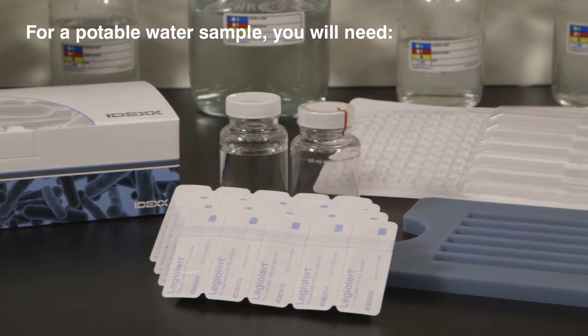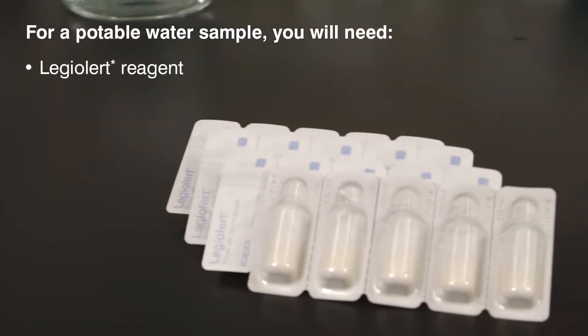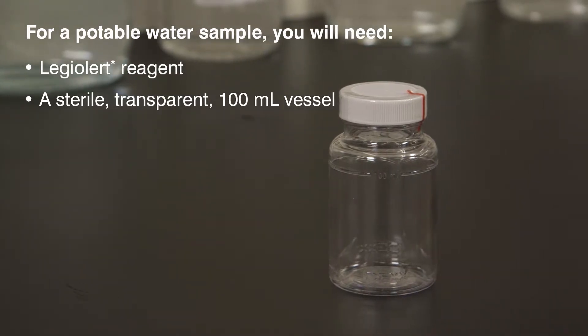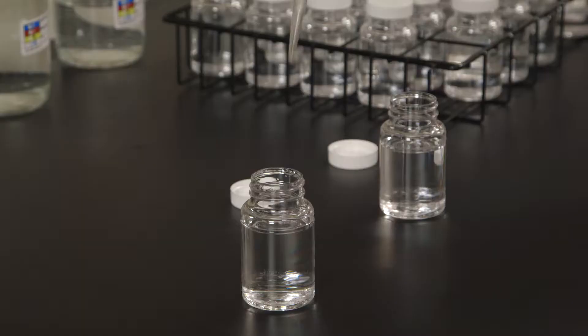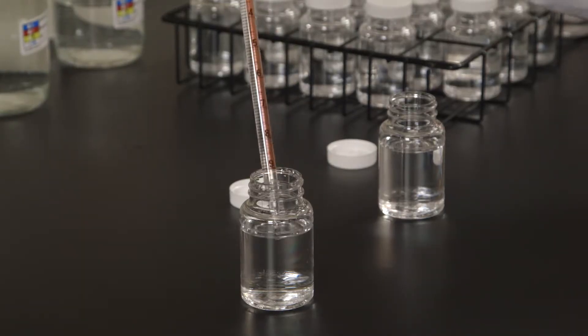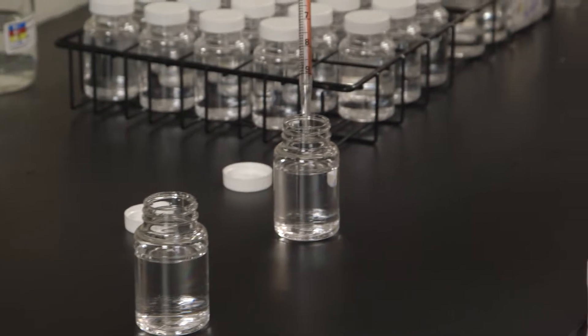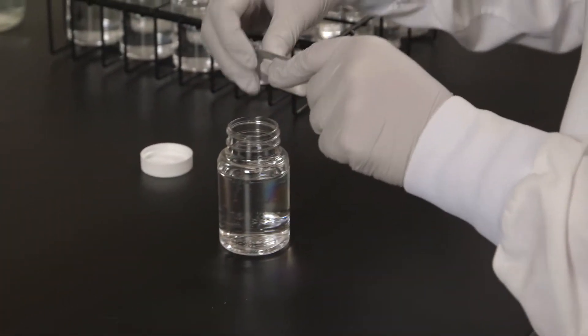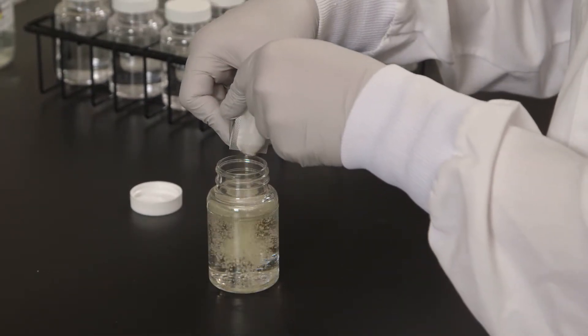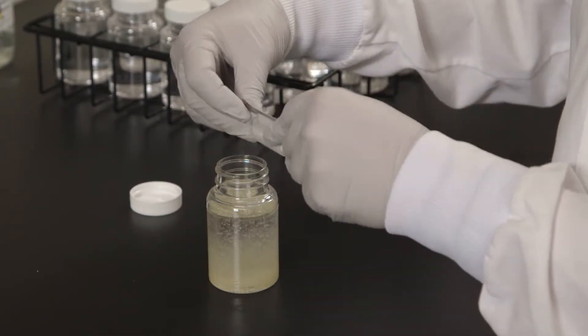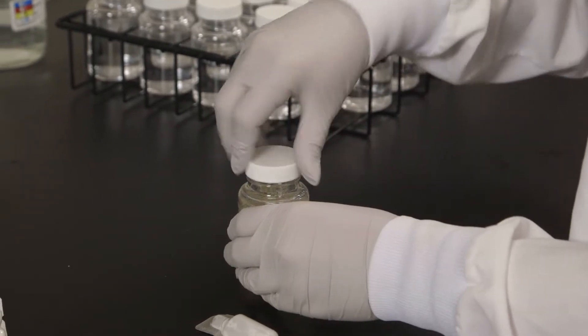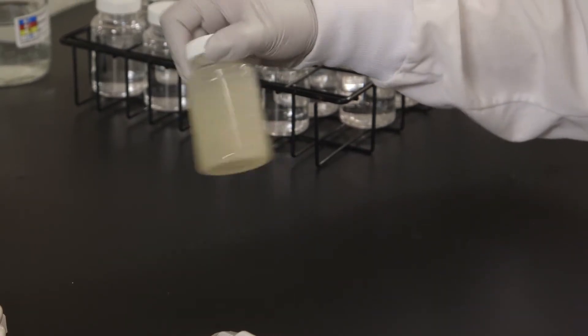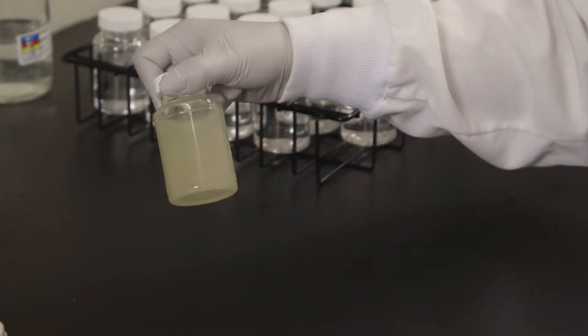To prepare a potable water sample, you will need the LEG-ALERT reagent, a sterile transparent 100 mL vessel, and sterile diluent. Add 10 mL of sample to 90 mL of sterile diluent and bring the sample to room temperature. Snap open the reagent pack and pour the powder into the 100 mL water sample. Cap the vessel and shake until the contents are dissolved. The sample may remain cloudy. This potable water sample is now ready to be quantified.